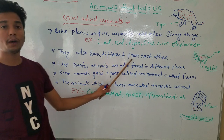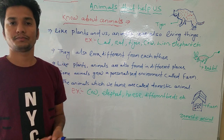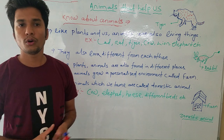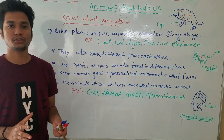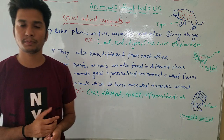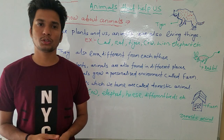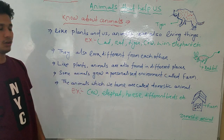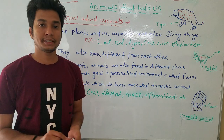Like plants, animals are also found in different places. In previous classes I told you we can see plants everywhere — not only in our home campus, park, or garden, but everywhere in our area. Like this, you can see different types of animals in different places in our environment. You might have seen dogs, horses, camels, cows, and elephants in different places. Write down all these things in your classwork notes.